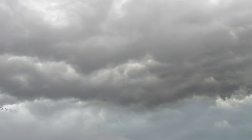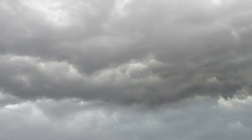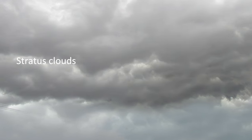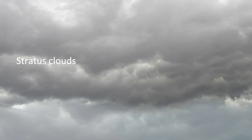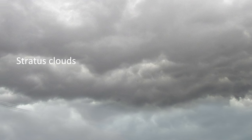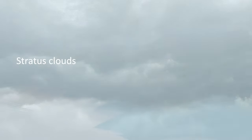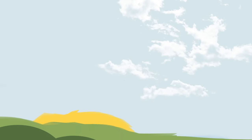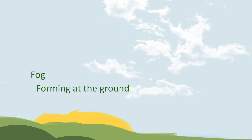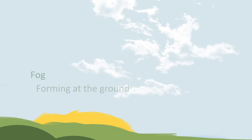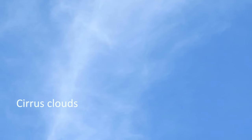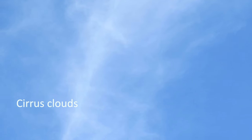Stratus clouds are blanket or sheet-like clouds. They can form at many different heights, including forming at the ground, when it is then called fog. Cirrus clouds are high clouds that look like thin, wispy strands of hair.